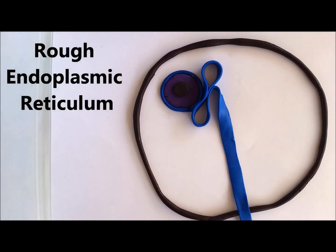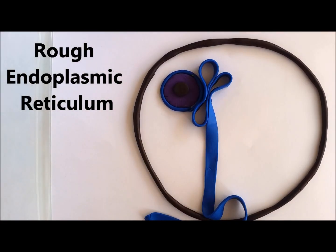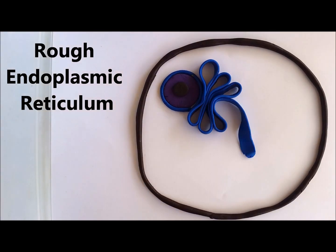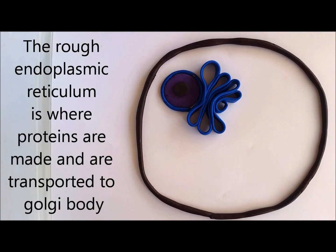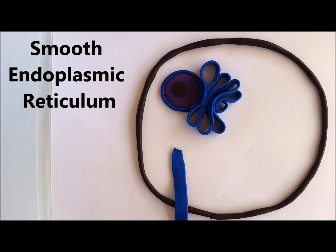Next we have the rough endoplasmic reticulum. The rough endoplasmic reticulum is a series of flattened membrane sacs where different materials and substances are produced for the cell and then transported to the Golgi body, which is another organelle we're going to look at later on.